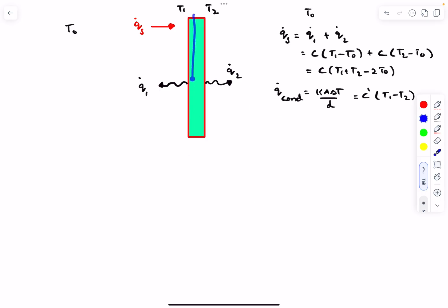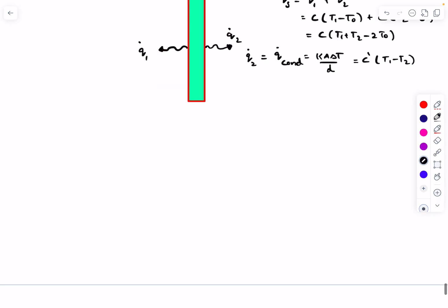So any section you choose, the heat transfer rate due to conduction at that specific location will be the same. Now we can just equate this to Q2 dot because we are balancing the heat at this particular surface. This is the second equation.